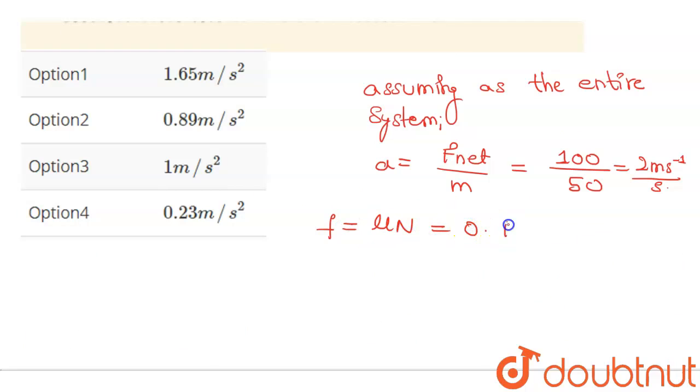That is equals to 0.4 into 10, that is 10 into 10. Simply this will give us 40 Newton. This is our friction acting.